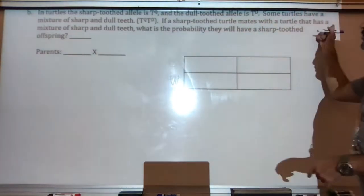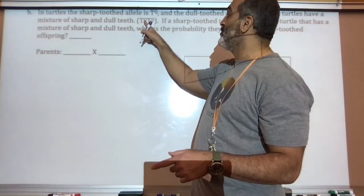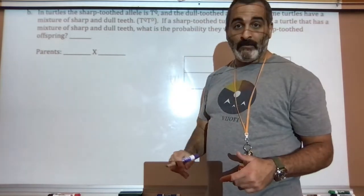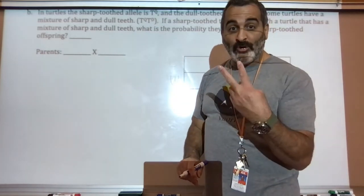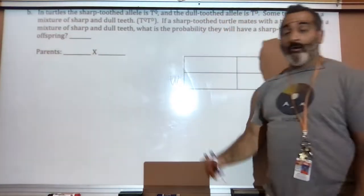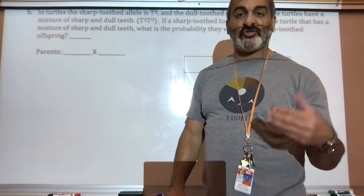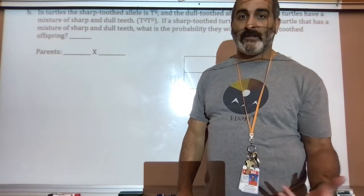Some turtles have a mixture of sharp and dull teeth, so they get a Q and a D. Two Qs, sharp. Two Ds, dull. One of each, a Q and a D. And you have a mixture of sharp and dull teeth. Let's first figure out the parents.